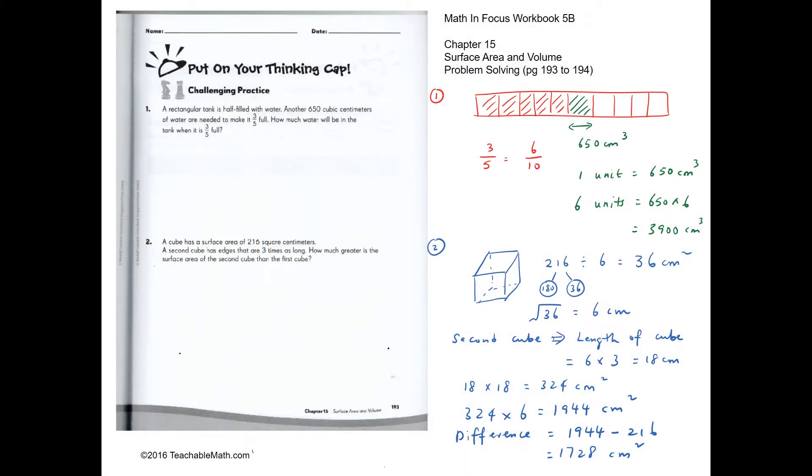Challenging practice. Question 1: A rectangular tank is half full of water. Another 650 cm cubed is needed to make it three-fifths full. How much water will be in the tank when it is three-fifths full?